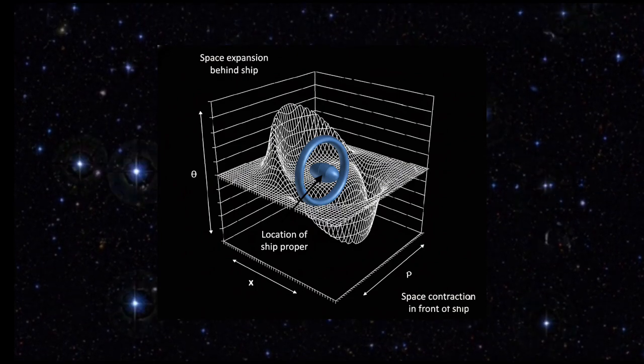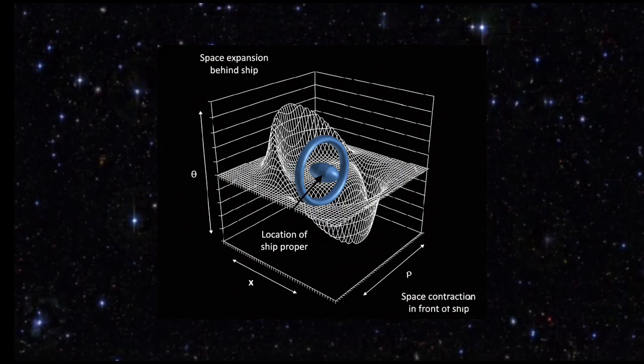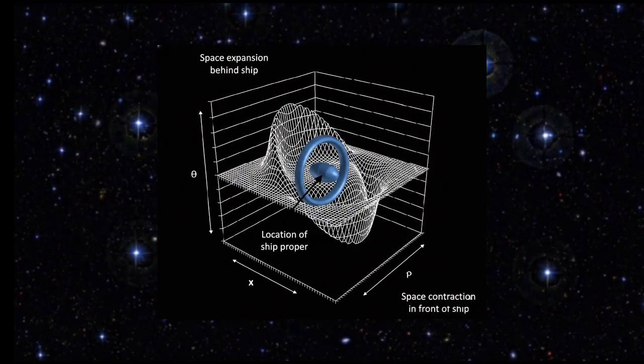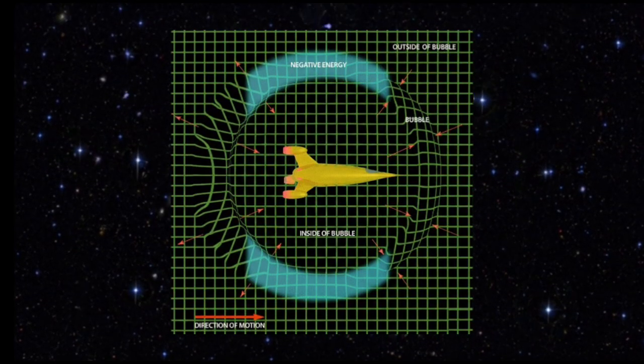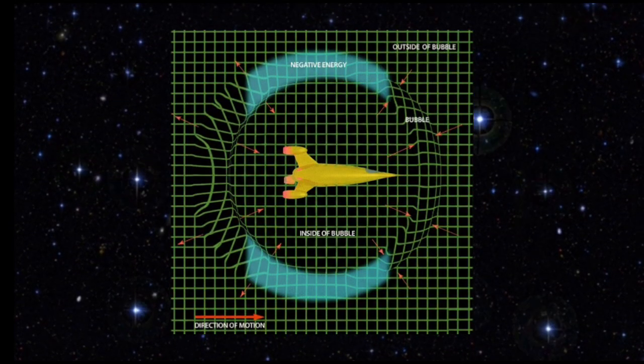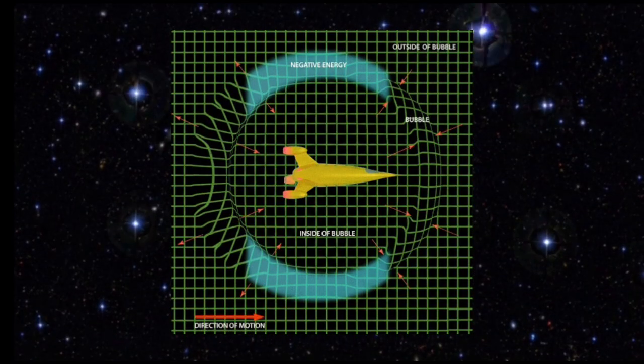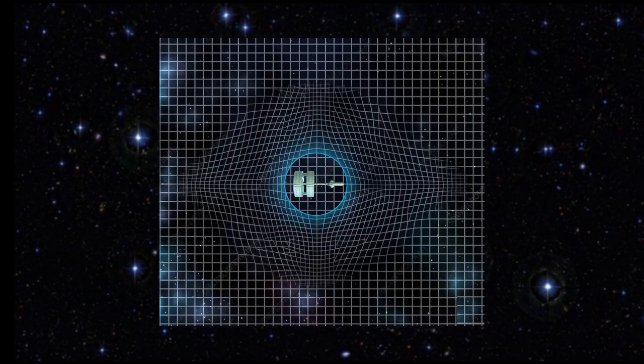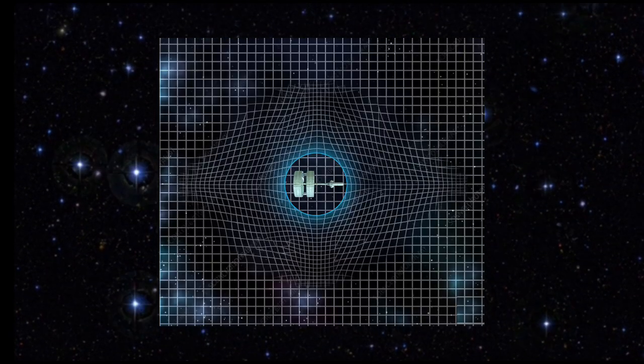Compression and expansion: the bubble contracts spacetime ahead and expands it behind, effectively riding a spacetime wave. This is the essence of the Alcubierre metric. Bubble geometry: the bubble's shape is critical. Early designs were spherical and hugely inefficient. Modern refinements, elongated or toroidal geometries can cut the energy cost by orders of magnitude.